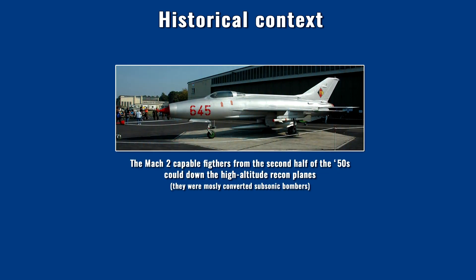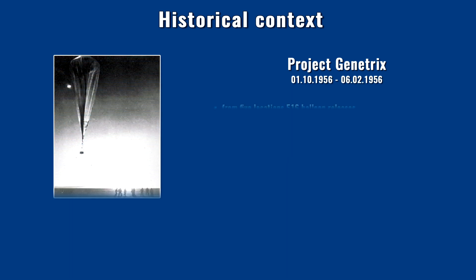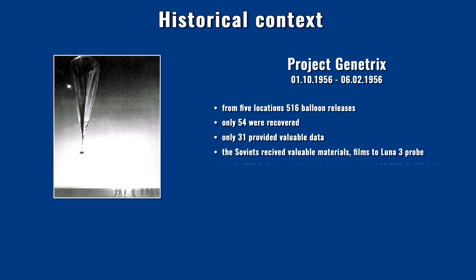During the Cold War, the top military leadership of the US desired accurate information about the opposing military alliance. However, obtaining that information was limited by the parameters of high-altitude reconnaissance planes, which were special variants of subsonic bombers that Mach 2-capable fighters could intercept. Before the appearance of the top-secret U-2 photo reconnaissance plane, the Americans also tried to use balloons to spy on Soviet military secrets. As part of Project Genetrix, in 1956, between January 10th and February 6th, 516 high-altitude balloons were launched from five different locations to photograph the Warsaw Pact and the Soviet Union.